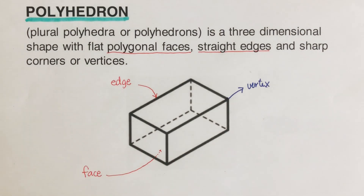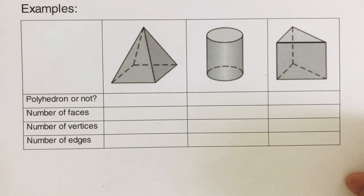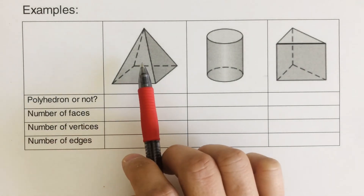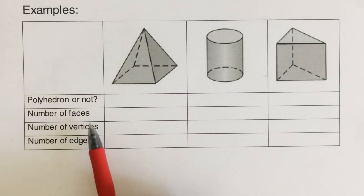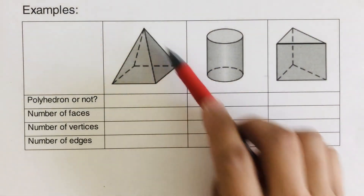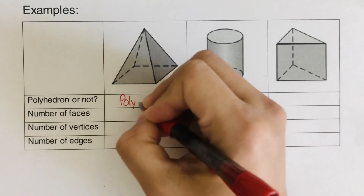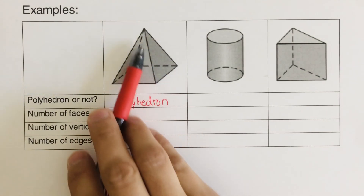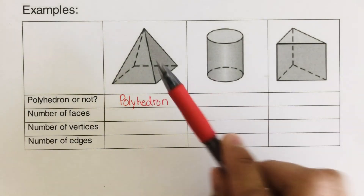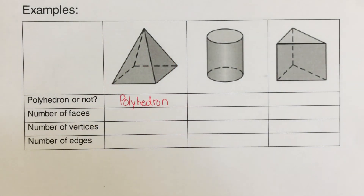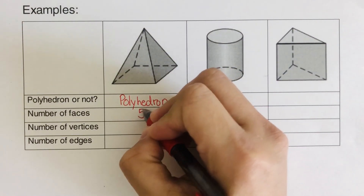We can determine if the figure is a polyhedron or not. Let's take this first example right here. We have three solid figures here. The first thing we need to do is determine: is this a polyhedron or not a polyhedron? The first condition is that it should be made of straight edges, and it is — so we can call this a polyhedron. Now let's count the number of faces. Faces refers to the flat surface that serves as the covering for the solid. We have one face in the front, one face at the back, one face on the right, one face on the left, and one face at the bottom — so the total number of faces is five.